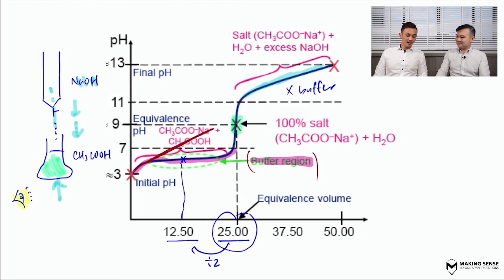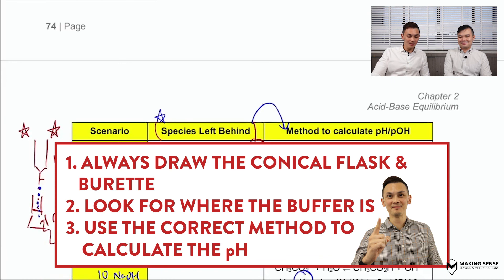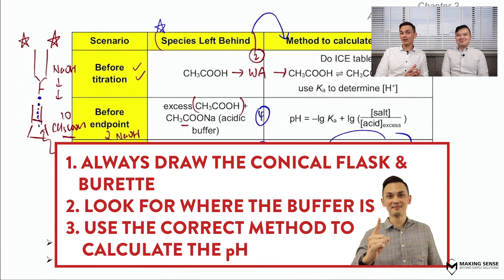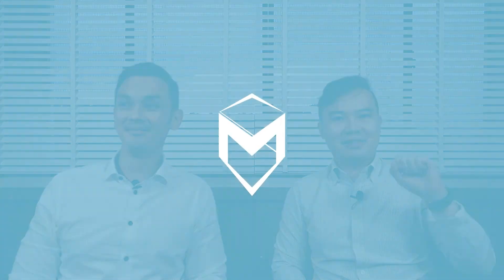To summarize: draw the conical flask and the burette, look for where the buffer is — it can't be memorized, it has to be derived by focusing on the conical flask. Ask yourself what are the species left behind, then use the correct method to calculate the pH. Once that is done, you will be able to draw the titration curve. This is a skill we will share in more detail when we return to class. That is just one of the four titration curves; the other three will be covered in class together with the rest of the students. See you guys, bye-bye.